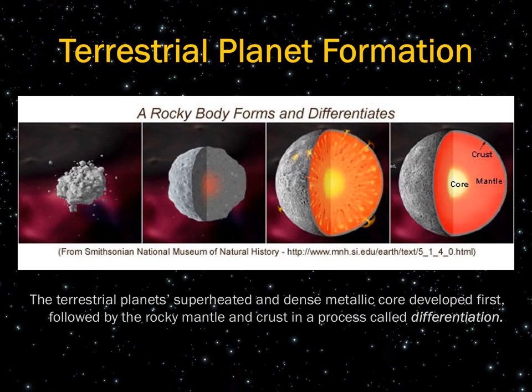The terrestrial planet's superheated dense metallic core developed first, followed by the rocky mantle and crust, in a process known as differentiation. The heat radiating from the core melted the surrounding rocks in the mantle, and the overlying crust developed as the uppermost mantle cooled. The core generates not only internal heat, which drives crustal motion in the process of plate tectonics, but also a magnetic field.